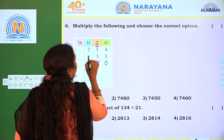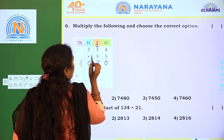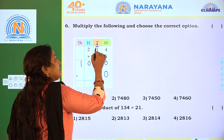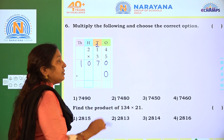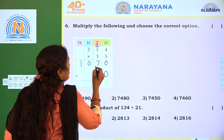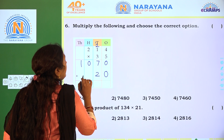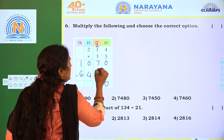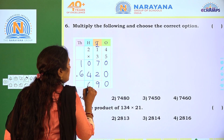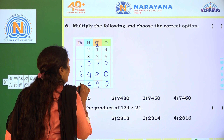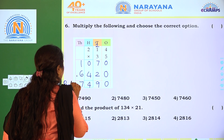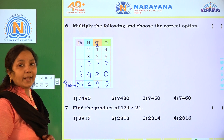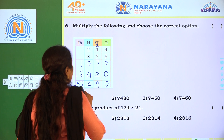5 plus 2 is 7. 5 2's are 10. Now the 1's place should be 0 because we are multiplying the tens place digit. 3 4's are 12 — write 2, 1 regrouping. 3 plus 3 plus 1 is 4. 3 2's are 6. Adding: 0 plus 0 is 0, 7 plus 2 is 9, 0 plus 4 is 4, and 6 plus 1 is 7. The product is 7,490 — option 1.